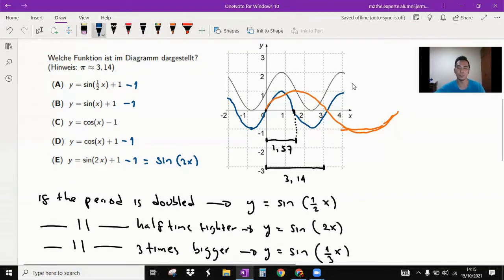So this blue curve is y equal to sine 2x, and the orange one is y equals sine x.